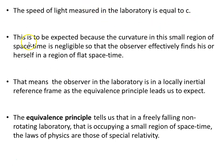The speed of light measured in the laboratory is equal to c. This is to be expected because the curvature in this small region of spacetime is negligible, so that the observer effectively finds his or herself in a region of flat spacetime. Think of the surface of the Earth. Looked at from space, the Earth is highly curved, but if you're standing on the front doorstep of your home, and you look out along the street, then to you it's quite flat looking locally, because you're only seeing a small local region of the surface of the Earth. That means the observer in the laboratory is in a locally inertial reference frame, as the equivalence principle leads us to expect, and the equivalence principle tells us that in a freely-falling, non-rotating laboratory that is occupying a small region of spacetime, the laws of physics are those of special relativity.